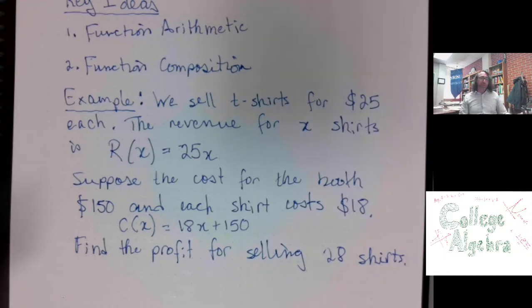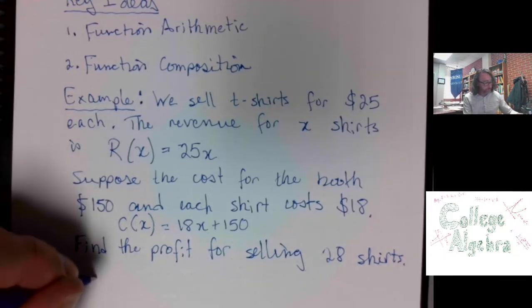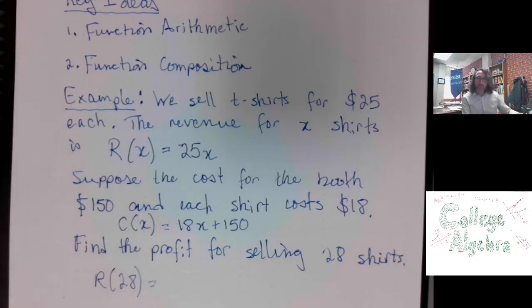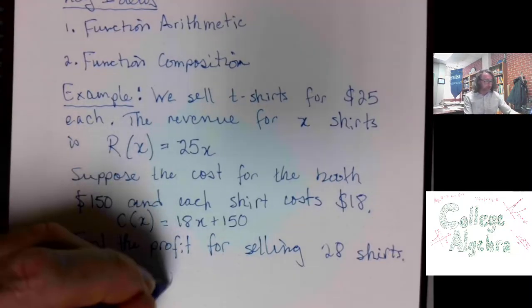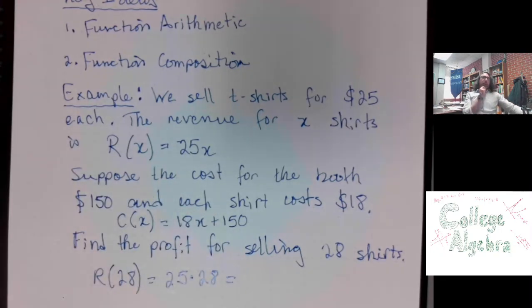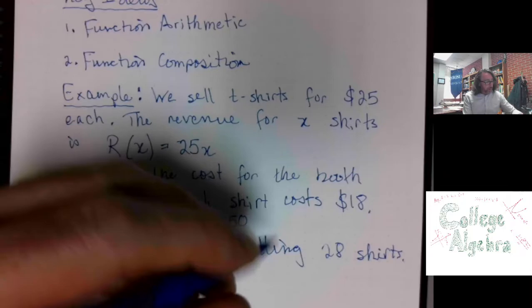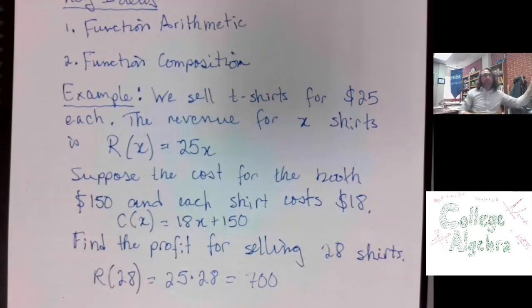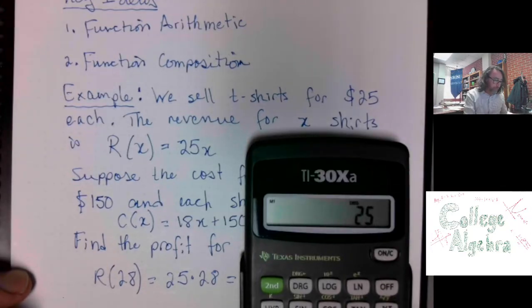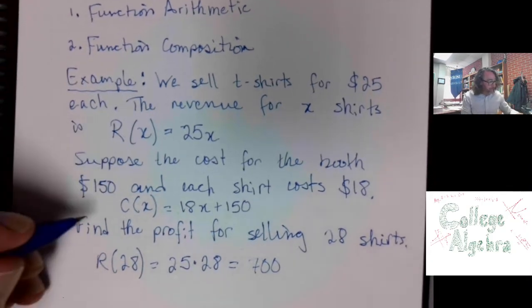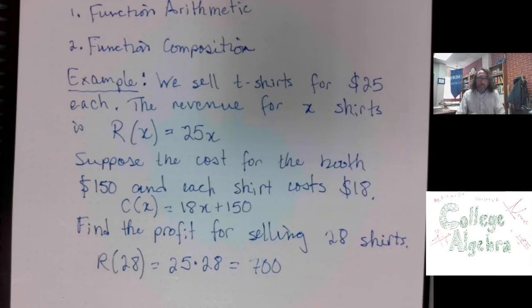This is asking us to find the profit for selling 28 shirts. R of 28, the revenue that I get for selling 28 shirts is 25 times 28. And let's do some calculating here. That looks like 700 to me. I'm just going to go ahead and check on a calculator just to make sure. 25 times 28, 700. Great. So, we get $700 coming in for those shirts.